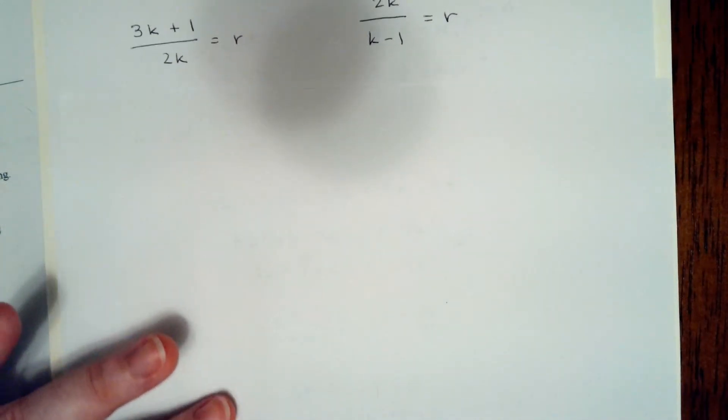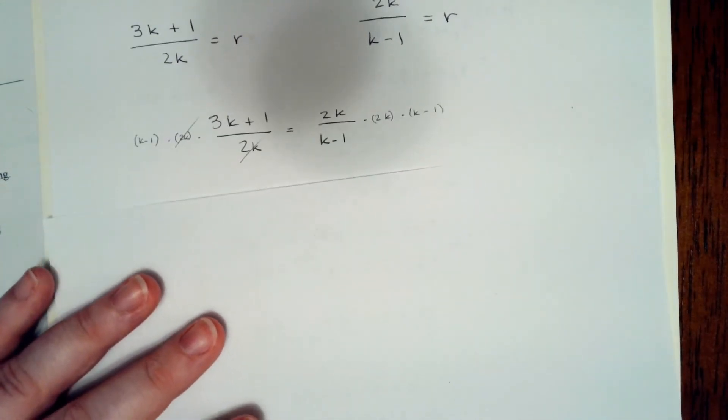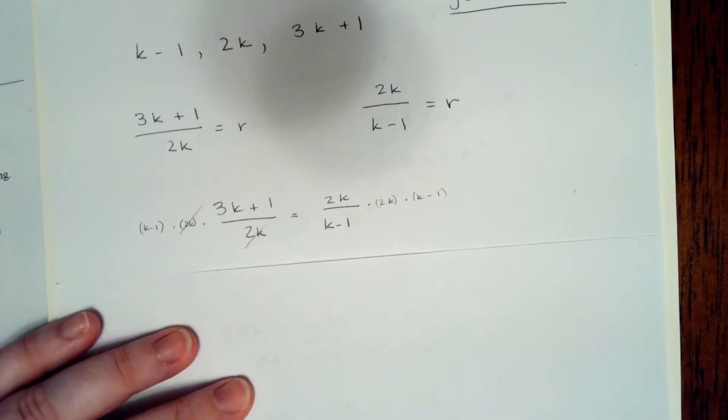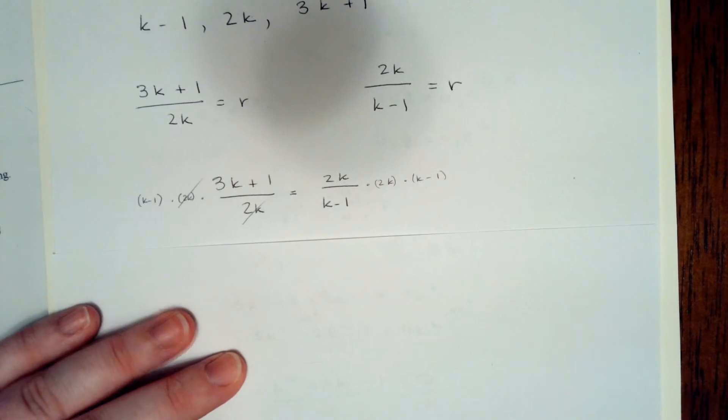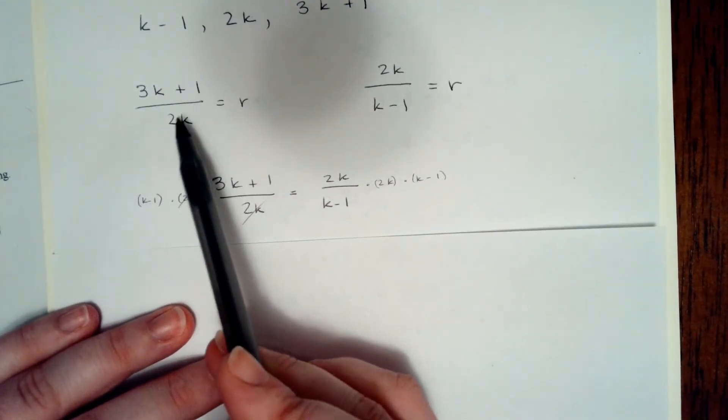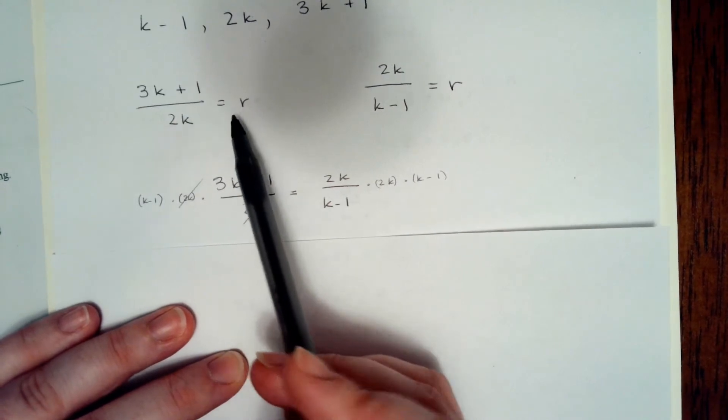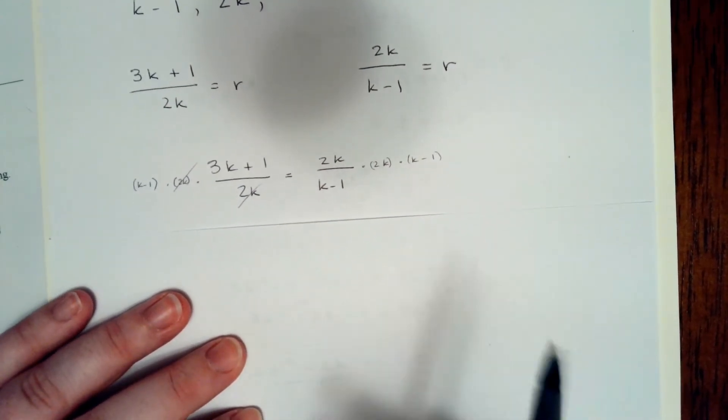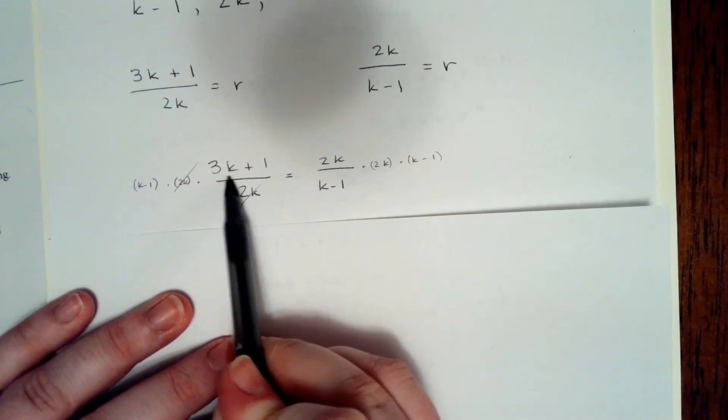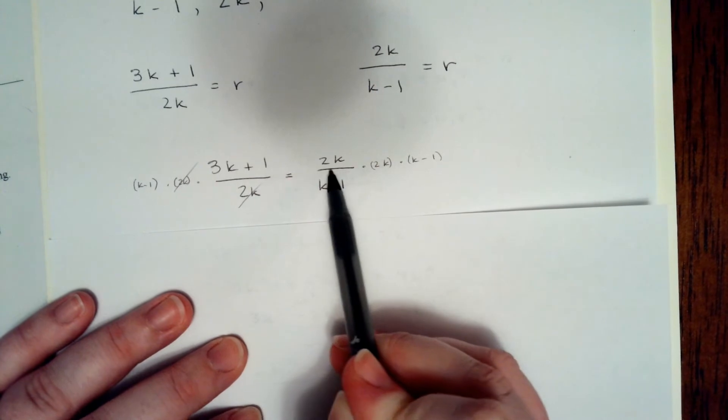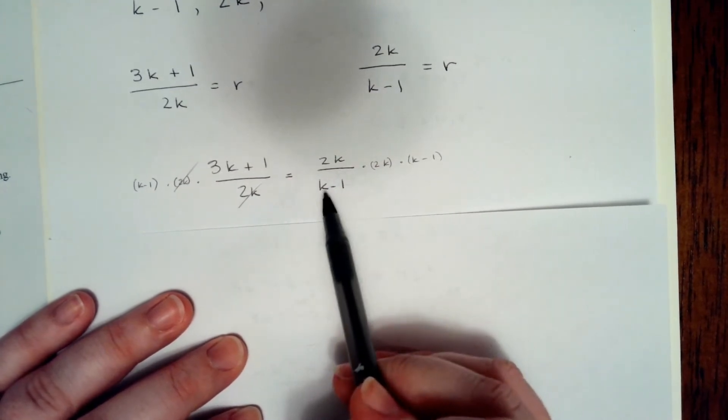Now, because those are both equal to r and they're the same problem, they mean the same thing. If we're to solve those, if we had an answer to plug back in, they would come out to be equal to the same thing. So we can set those equal to each other. So we can say 3k plus 1 divided by 2k equals 2k divided by k minus 1.